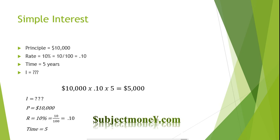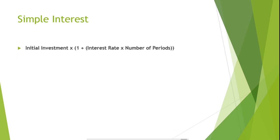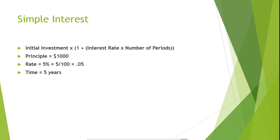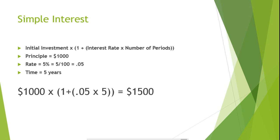What if we invested money today in an investment that paid simple interest and we wanted to calculate what the total investment would be worth at some point in the future? Our formula to solve this would be the initial investment times one plus the interest rate times the number of periods the investment would be held for. So if Tom invested $1,000 in an account that earned 5% interest and he held this investment for five years, his investment would be worth $1,500 five years from today.